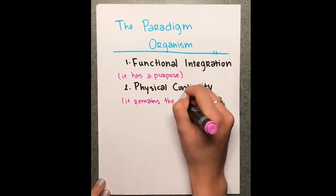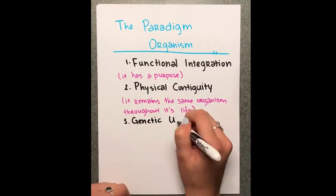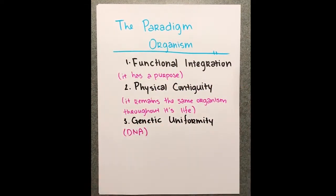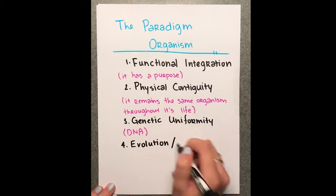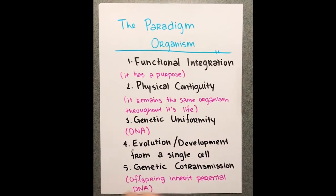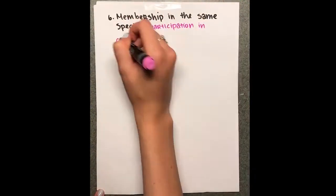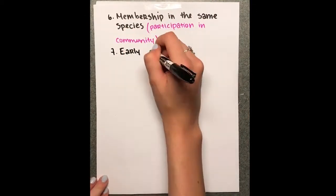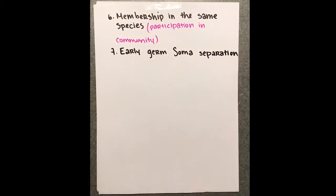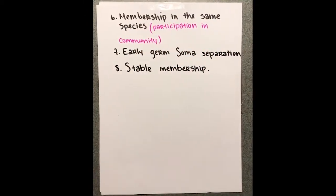What makes up a paradigm organism is functional integration, physical contiguity, indivisibility, genetic uniformity, development from a single cell, genetic co-transmission, membership in the same species, early germ-soma separation, and stable membership.